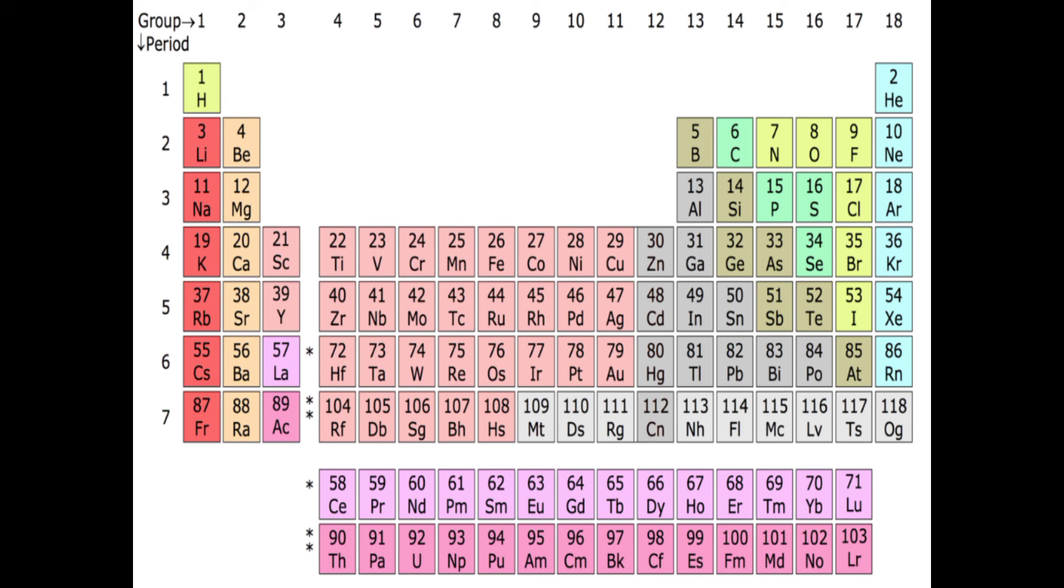Here we have to see the number of elements in each period. There are two elements in period 1, eight in period 2, eight in period 3, eighteen in period 4, eighteen in period 5, and period 6 is complete. Period 7 is incomplete. The first period is shorter with two members.